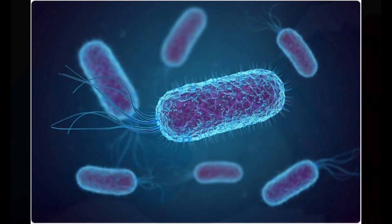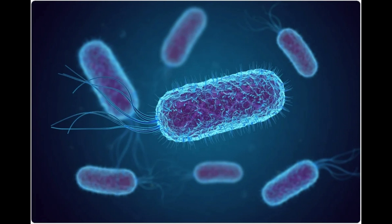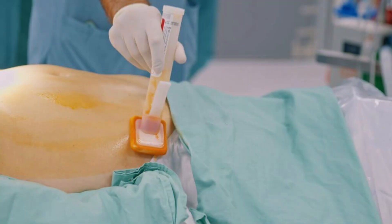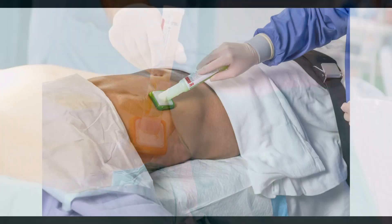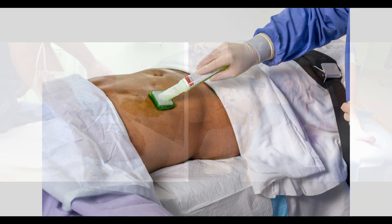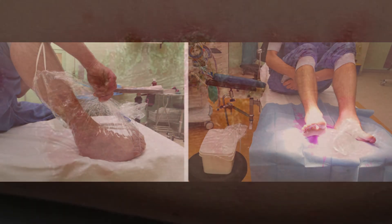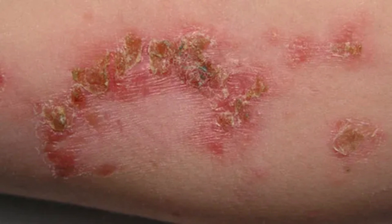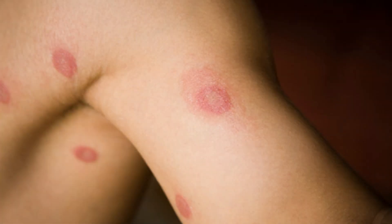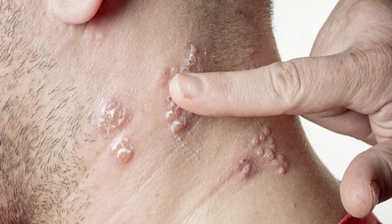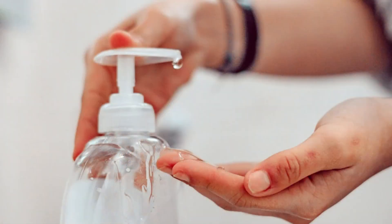Here are its uses. Number one: wound care. Betadine is used for cleaning cuts, minor burns, and surgical wounds — it helps prevent infection by killing bacteria and other germs on contact. Number two: pre-surgical disinfection. In medical settings, it's used to sterilize the skin before surgery or other invasive procedures. Number three: infections. It is also applied to treat skin infections like ulcers, pressure sores, and even infected wounds.